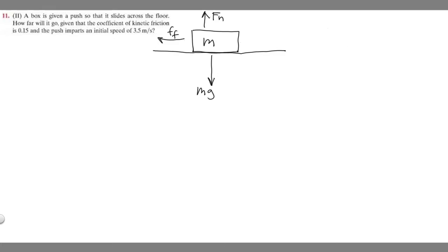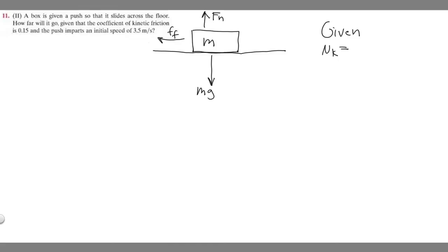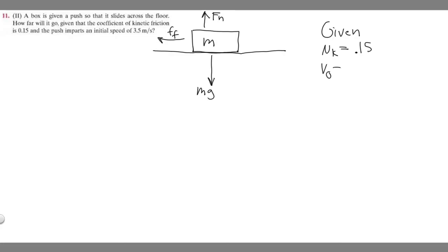Let's write down what we're given. The coefficient of kinetic friction, which we call mu sub k, is equal to 0.15. And we know it's going to impart an initial speed of 3.5 meters per second. So we know the initial velocity — the initial speed is 3.5 meters per second.